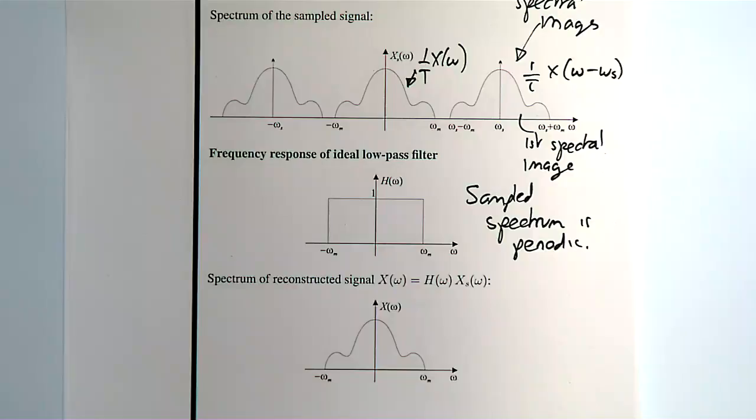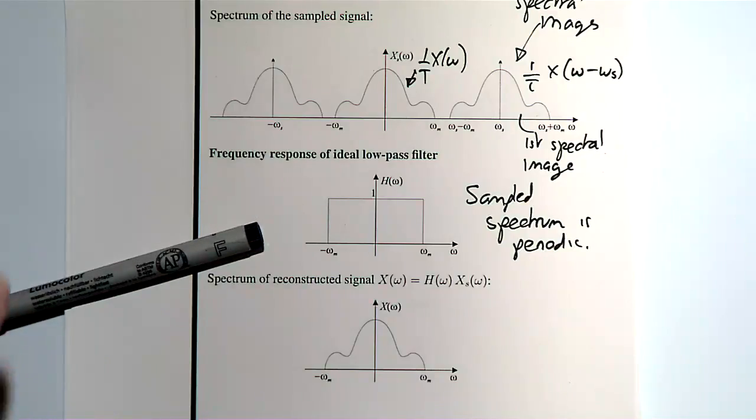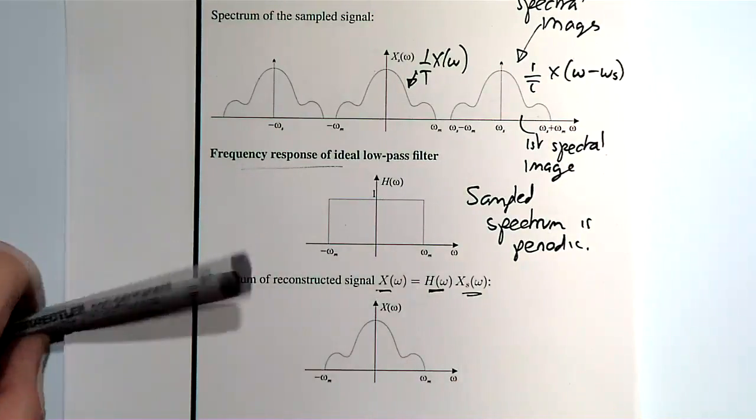So how do you get back to the original spectrum? Well, we haven't properly done frequency responses of systems, but if you take a leap of faith, it turns out that the spectrum at the output of the system is a frequency response of a filter multiplied by the spectrum of the input.